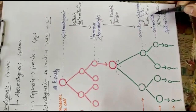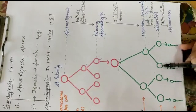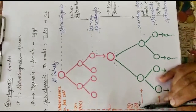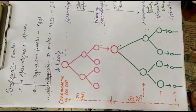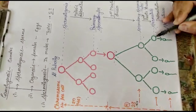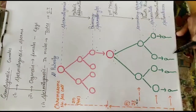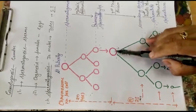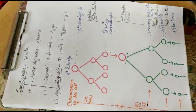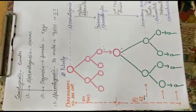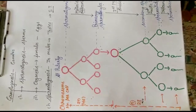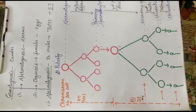Each secondary spermatocyte then undergoes the second meiotic division, leading to the formation of four spermatids. The four spermatids are also haploid, having 23 chromosomes. Each of the spermatids then transforms into a spermatozoon. In this way, from one diploid primary spermatocyte, four haploid spermatozoa are formed by the process of spermatogenesis.